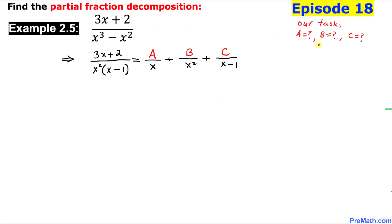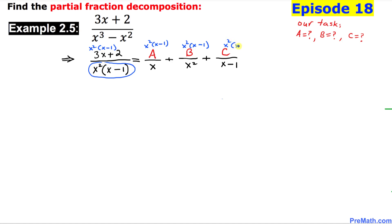Our task is to find the values of A, B, and C. The denominator is x squared times x minus 1, so we are going to multiply that across the board — multiplying x squared times x minus 1 on both sides of the equation.